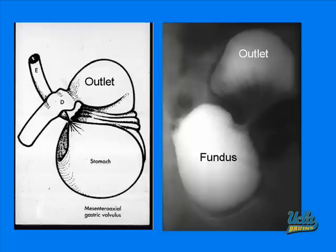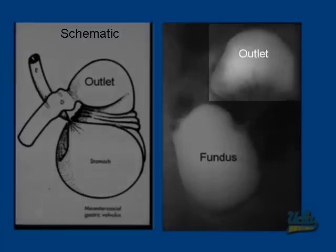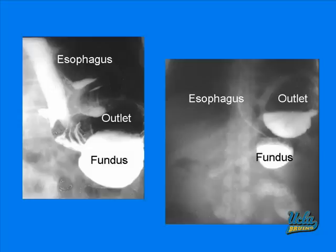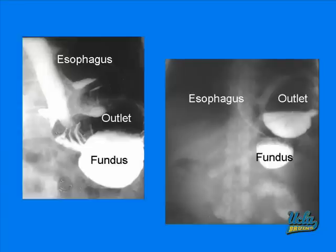Here is a case of mesentericoaxial gastric volvulus. We see two pictures: the one on the left is the schematic of the one pictured on the right. The picture on the right shows the outlet, which also consists of the antrum, shown to be superior and anterior instead of inferior and posterior. Here are two more cases of mesentericoaxial gastric volvulus — the esophagus in the left image has been dilated, and both outlets are shown to be superior and anterior.